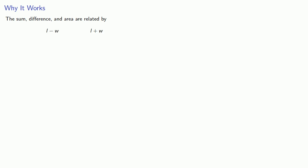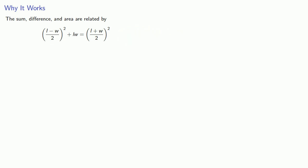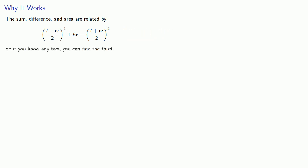The scribes just gave these steps without any sort of explanation, so let's think about why this works. We have three quantities of importance: the sum of the length and width, the difference of the length and width, and the area. There's a useful relationship between these three quantities, which you should verify algebraically — or even better, geometrically, to get some real insight into how the ancient world looked at mathematics. The important thing is that if you know any two of these three quantities — the sum, the difference, or the area — you can find the third.